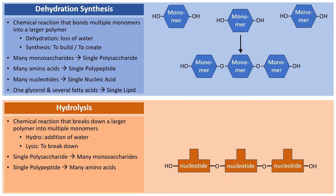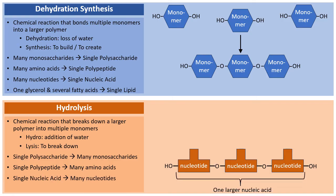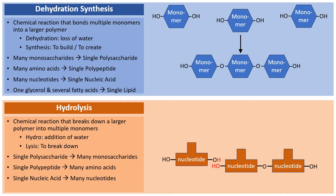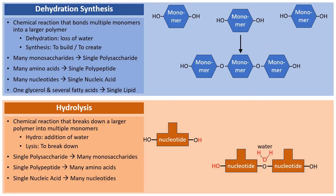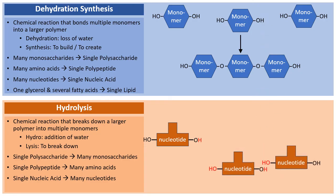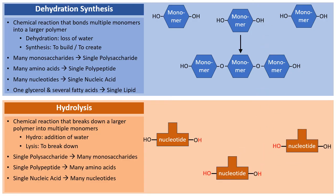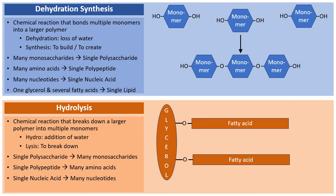For nucleic acids, a single nucleic acid can be broken down into many nucleotide monomers. With the addition of water, the nucleotide on the left is broken apart; adding water again breaks the other two nucleotides apart. We started with a single nucleic acid and ended up with three nucleotides.